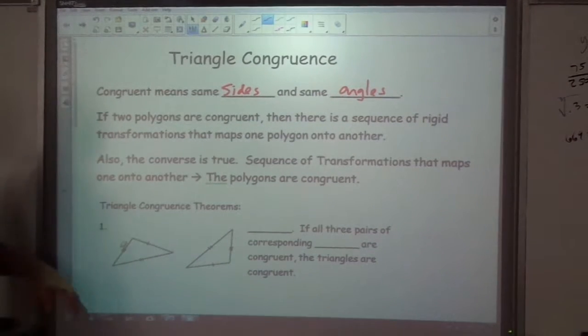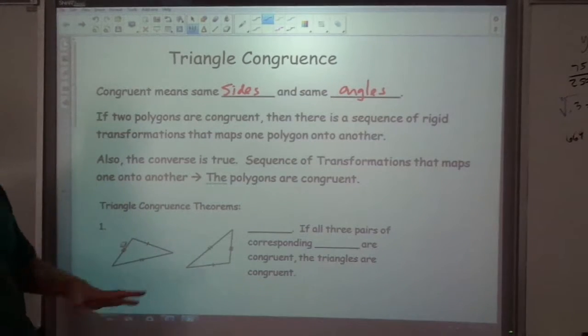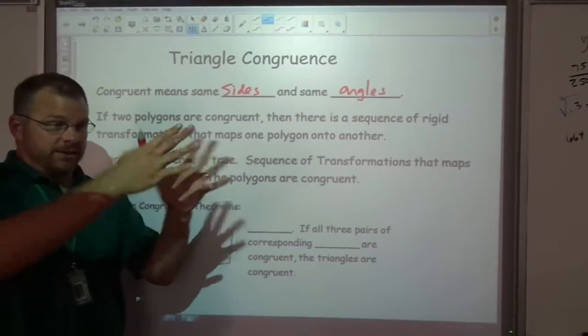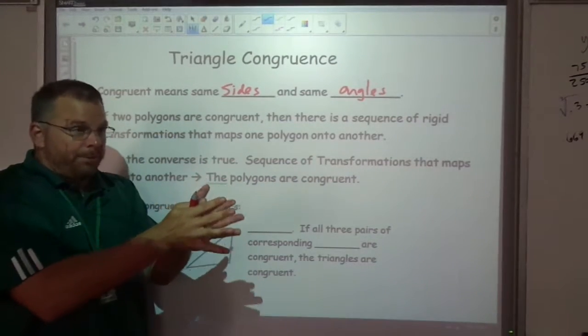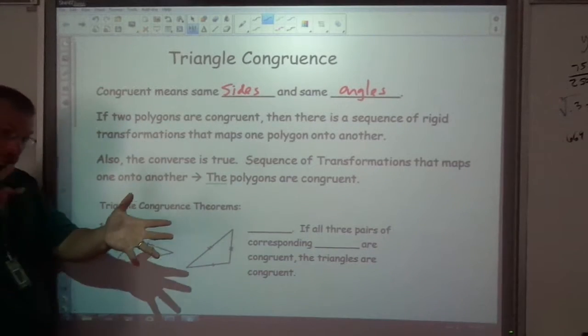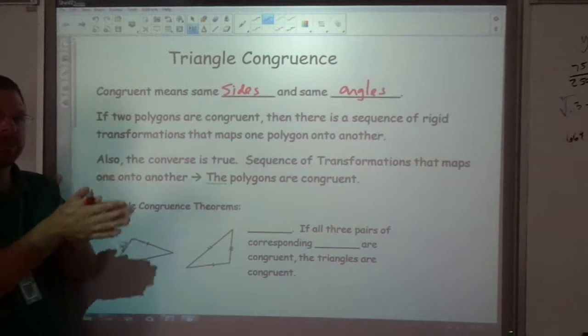We also know that if they're congruent, there is a sequence of transformations that maps one onto another. We can take one triangle and reflect it and turn it and flip it and slide it, and they would match up. So the converse of that is true. If you can do all that stuff and move it around to make it match, then they must be congruent.